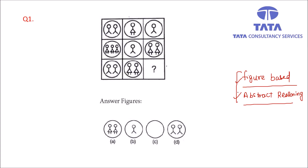Let us start with question number 1. We have to find the missing figure. Inside the circle we can find 2, and then 1 and 1. Then 3 persons and 1, then 2. So inside the circle we have 2 persons and then 1 — so 2 minus 1 equals 1. Here we have 3 and 1, so 3 minus 1 equals 2. Here we have 2 persons and 2 persons, so in this circle we will have 0 persons. Option C is the correct answer.